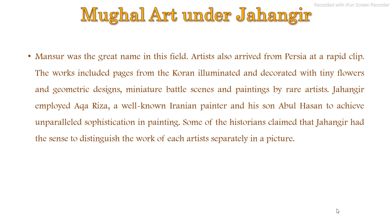Mansoor was a great name in this field. Artists also arrived from Persia at a rapid pace. The works included pages from the Quran, illuminated and decorated with tiny flowers and geometric designs, miniature battle scenes, and paintings by rare artists. Jahangir employed Aqa Riza, a well-known Iranian painter, and his son Abul Hassan to achieve unparalleled sophistication in painting. Some historians claim that Jahangir had the ability to distinguish the work of each artist separately, even within a single picture.